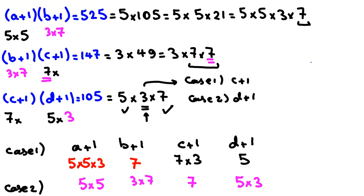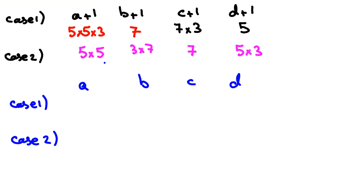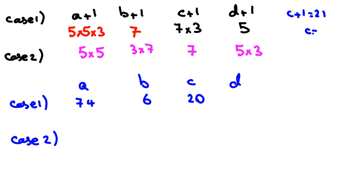Now we calculate A, B, C, D in each case. Case 1: A plus 1 = 75, so A = 74; B plus 1 = 7, so B = 6; C plus 1 = 21, so C = 20; D plus 1 = 5, so D = 4. Case 2: A plus 1 = 25, so A = 24; B plus 1 = 21, so B = 20; C plus 1 = 7, so C = 6; D plus 1 = 15, so D = 14.